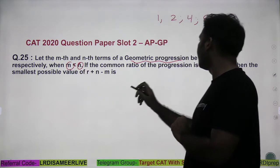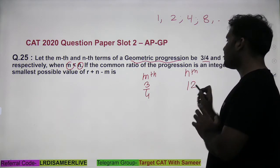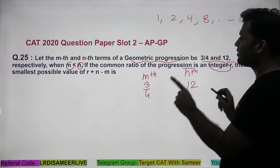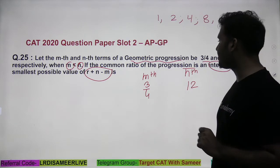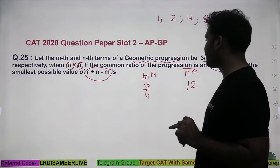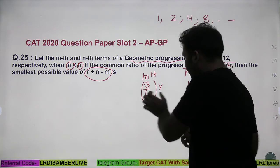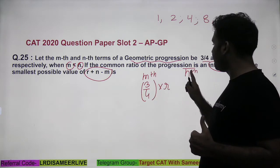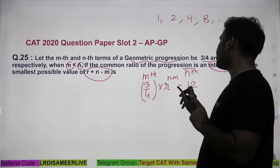It is given that m is less than n. The m-th term of a geometric progression is 3/4 and the n-th term is 12. The common ratio of the progression is an integer. We need to find the smallest possible value of r plus n minus m. The n-th term is obtained from the m-th term by multiplying by the common ratio r for n minus m number of times.